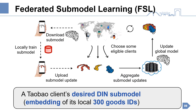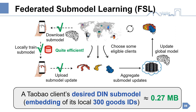Based on the concept of submodel, we propose a federated submodel learning framework, which is quite efficient to distribute complex learning tasks on mobile clients. For example, a Taobao client's desired DIN submodel is less than 1 megabyte. Further, if the submodel degenerates to the full model, the federated submodel learning will degenerate to conventional federated learning. Thus, our submodel framework is more general.